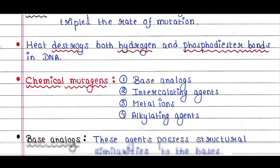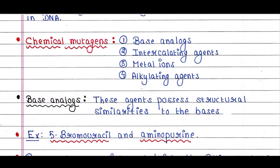Now let's talk about chemical mutagens. Chemical mutagens include base analogs, intercalating agents, metal ions, and alkylating agents.